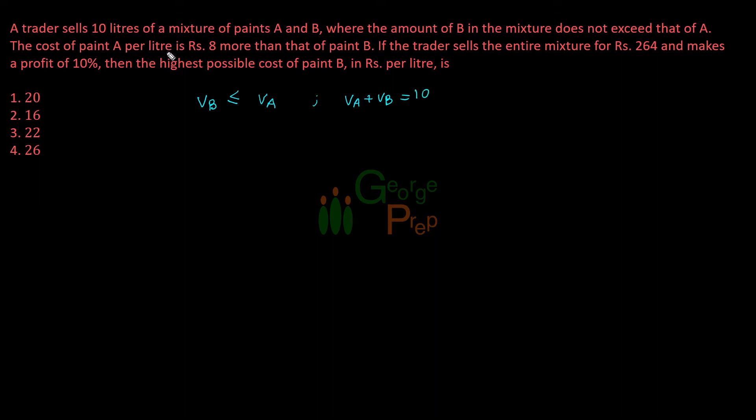The cost of paint A per liter is Rs. 8 more than that of paint B. Let me write the costs of paints per liter. The cost of A is the cost of paint B plus 8. I'm taking the cost of paint B as X per liter, so the cost of A will be X plus 8 per liter and the cost of paint B will be X per liter.